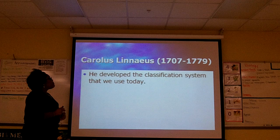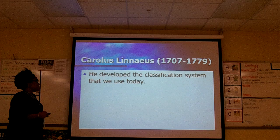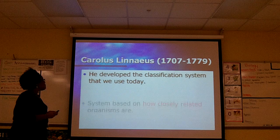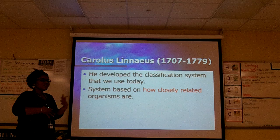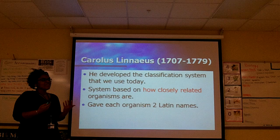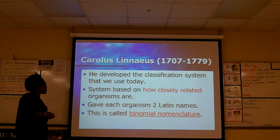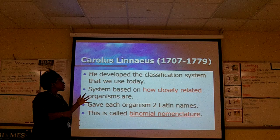Carolus Linnaeus is the one credited with our current classification system. He developed a classification system we actually use today — the Linnaean system. He based the system on how closely related all these organisms were, and he gave each organism two Latin names. Latin is a dead language, but in terms of science, Latin is king. We call this two-name system binomial nomenclature.